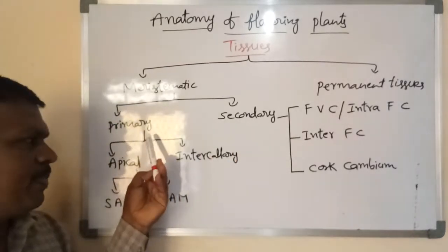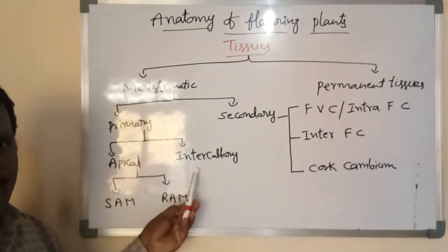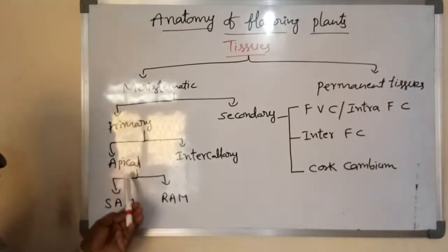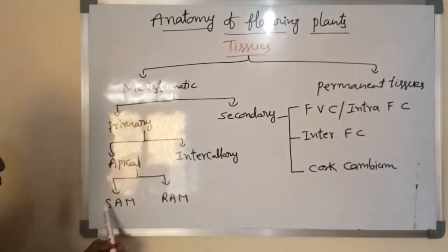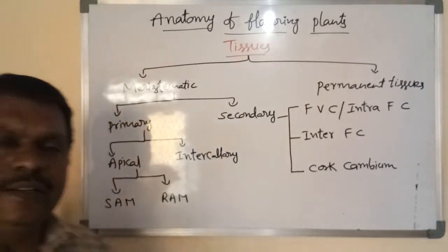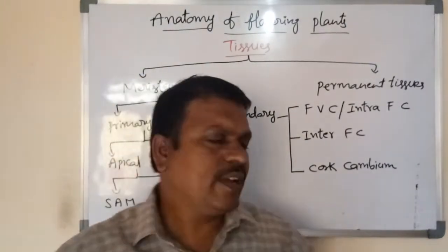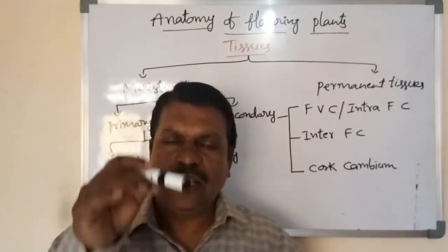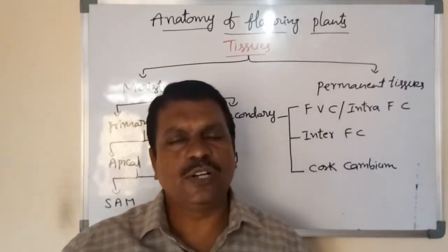Primary meristems are of two kinds based on their location: apical meristems and intercalary meristems. Apical means tip. Apical meristems are of two kinds: shoot apical meristem and root apical meristem. Shoot apical meristem plays a crucial role in growth of the stem lengthwise. Root apical meristematic tissues divide mitotically and generate new cells, so the root grows into deeper layers of soil towards positive geotropism.